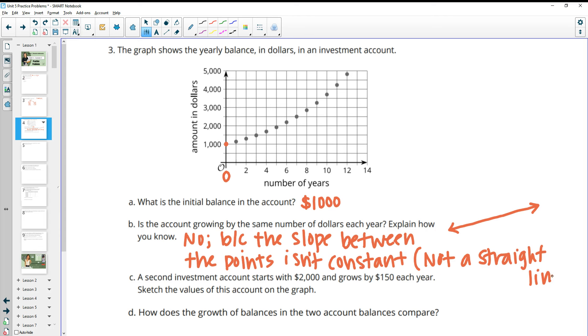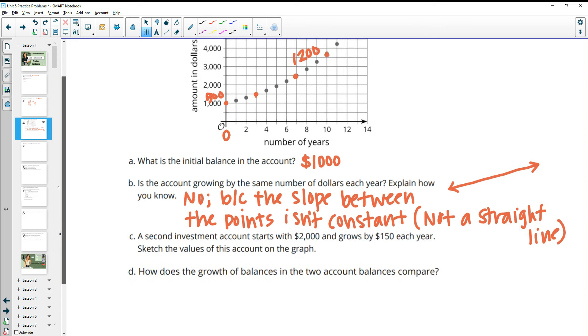You could also look at the difference between a couple of points. So if we looked from year 0 to 3, it went up 500. So 0 to 3, this is 500 growth. If we looked at another three-year chunk, so if we looked at 7 over to 10, we can see that's significantly more than 500. So that's like over 1,000, maybe like 1,200 growth. So those two differences aren't the same. That's another way you could explain it.